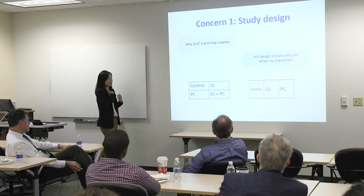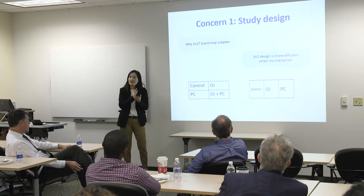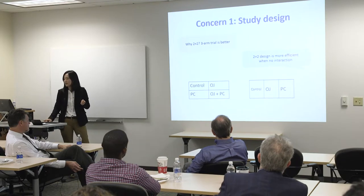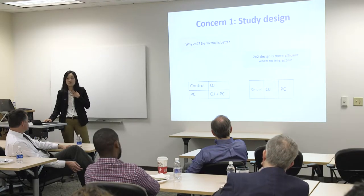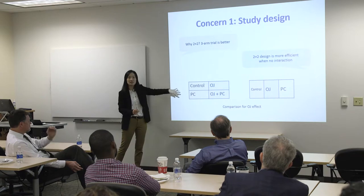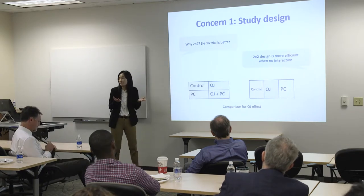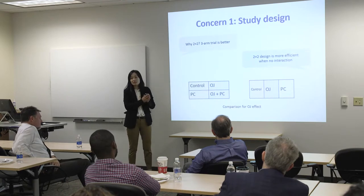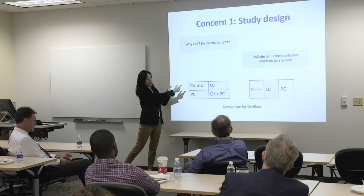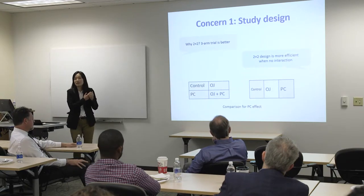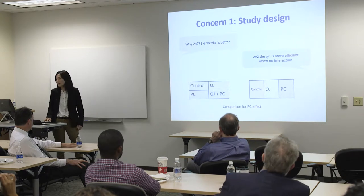In our response back to them, we said 2x2 design is sometimes used to test the interaction, but more than half of the time it is actually for efficiency. More specifically, if we can assume no interaction between the two interventions, to test the effect of opioid justification we can just compare these two pink boxes versus two blue boxes. Whereas with a three-arm design, you have to discard a third of the data and use just two-thirds, so we lose some power. We explained all this in the response.